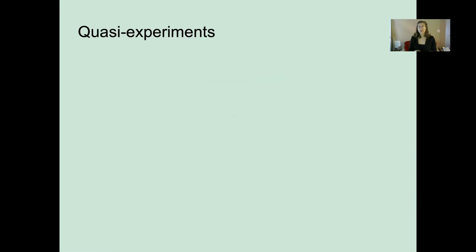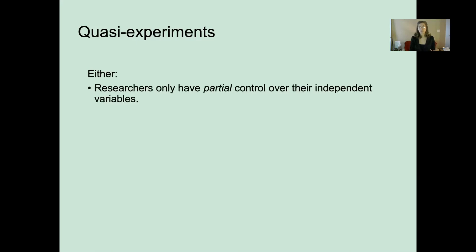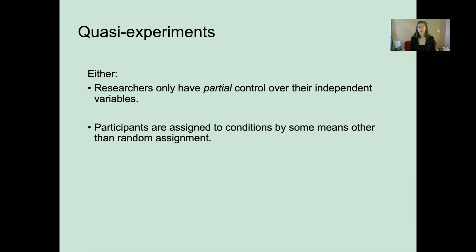Quasi-experiments, as you can probably guess from that word, is a type of study that is not quite an experiment. It falls short on one or more of those criteria — so we only have partial control over an independent variable, or participants were assigned to conditions by something other than random assignment.